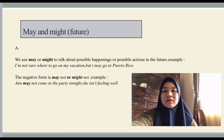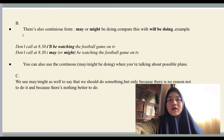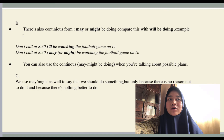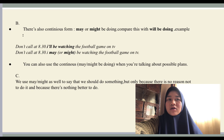It doesn't matter whether you use 'may' or 'might' — you can say 'I may go to Italy' or 'I might go to Italy.' There is also a continuous form: 'may/might be doing.' Compare: 'Don't call at 8:30 — I'll be watching the football game on TV' versus 'Don't call at 8:30 — I may or might be watching the football game on TV,' meaning perhaps I'll be in the middle of watching it. You can also use the continuous 'may/might be doing' when talking about possible plans: 'I'm going to Puerto Rico in July' means you are sure, while 'I might be going' expresses possibility.